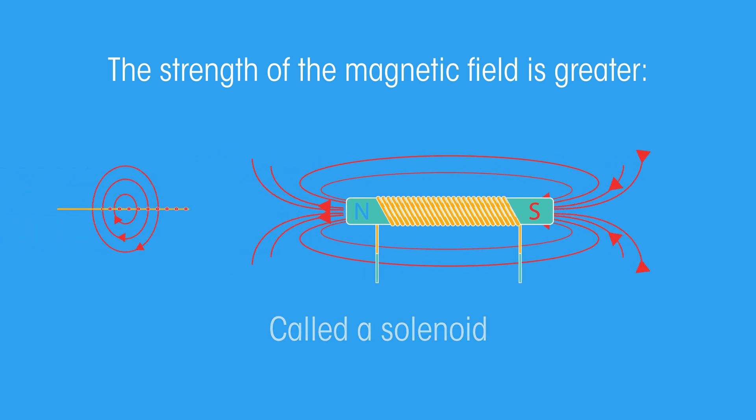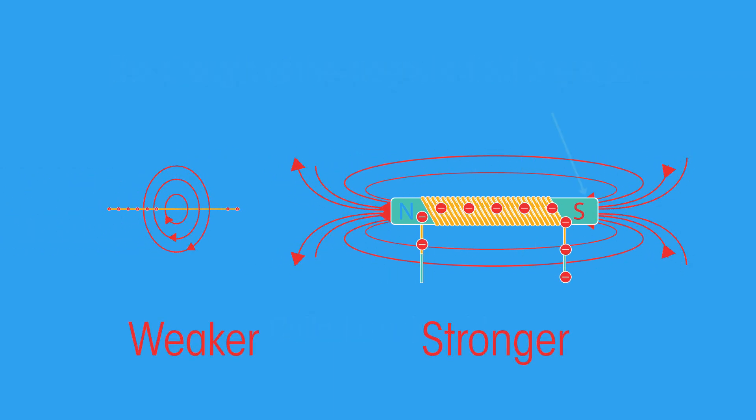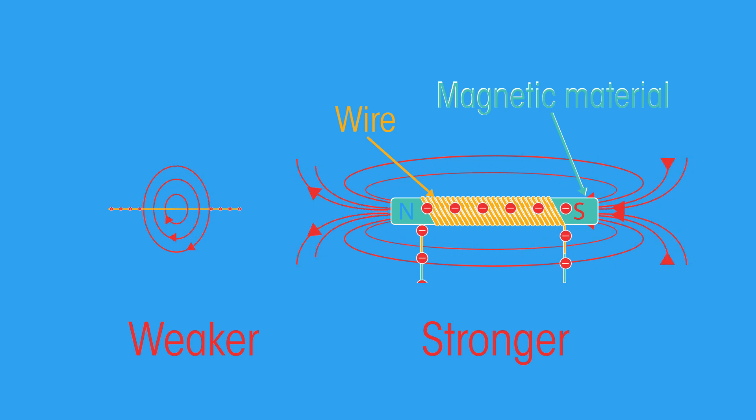The magnetic field around a straight wire isn't very strong, and so coiling the wire around an iron core creates a stronger electromagnet. This is sometimes known as a solenoid.